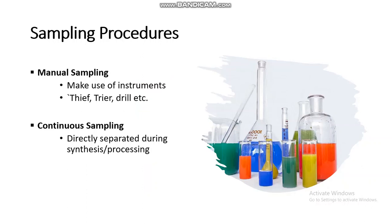There are two different methods for sampling. The first is manual sampling, for which different instruments are used like a thief, dryer, drill, etc. The second is continuous sampling, where the sample is directly separated during the synthesis or processing.